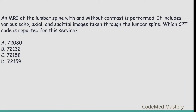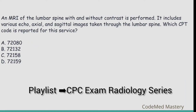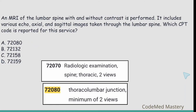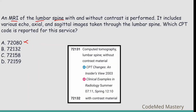For more information on the radiology series, check the playlist link in the description. Next question: An MRI of the lumbar spine with and without contrast is performed; it includes various axial and sagittal images through the lumbar spine. Which CPT code is reported? Option A: 72080 — radiologic examination, spine, thoracolumbar junction, minimum of two views. The question specifies MRI, so we cannot use 72080; eliminate option A.